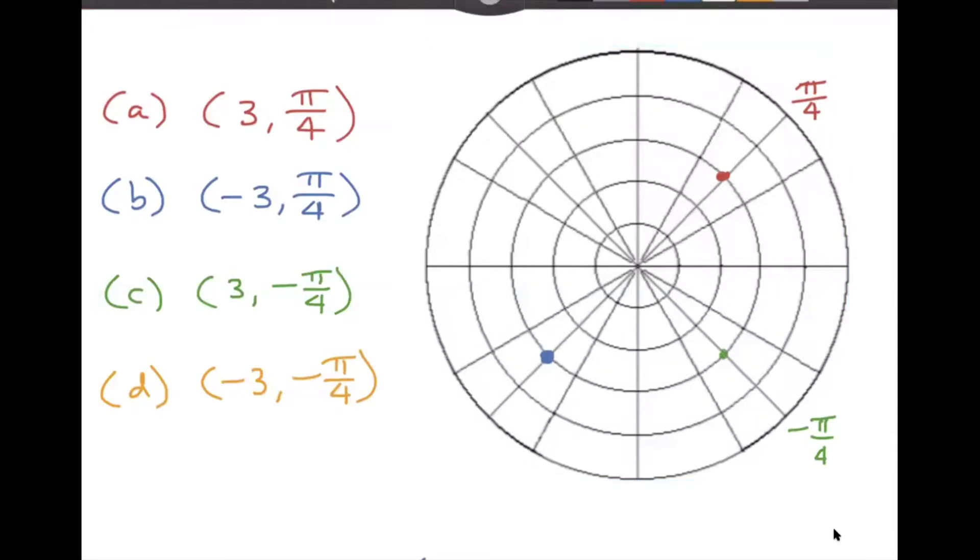And then finally, we have a negative three comma negative pi over four. So we would start along the same angle, but then we would reflect that point through the origin. One, two, three, we would wind up up there. So again, if you have never seen polar coordinates before, or if you're just rusty, please look at the video description on YouTube. And I will have the link to my pre-calc video where I definitely explain it from scratch.